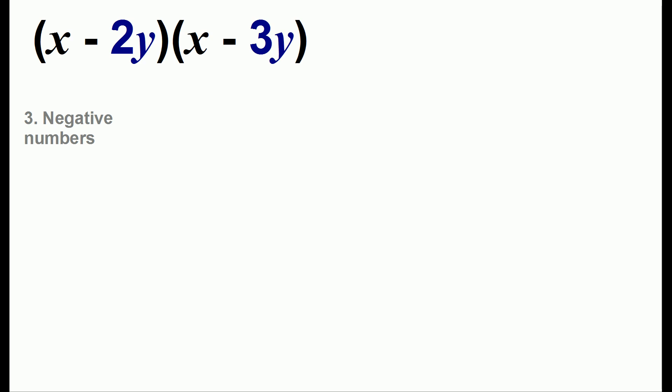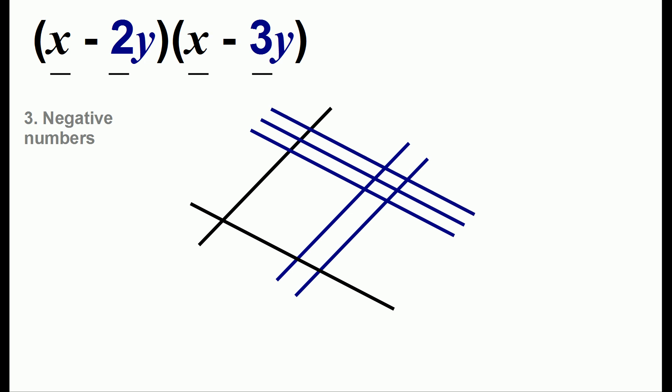Let's say you wanted to do (x - 2y) times (x - 3y). We'll draw the x with one line and for the negative 2y we'll draw two lines and we'll just remember that each blue line represents a negative y. For the other number we'll draw the lines in the other way and here again we have three lines which are each negative y. We make our groupings.